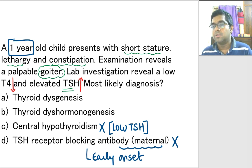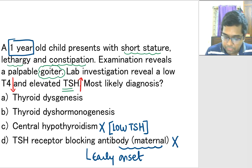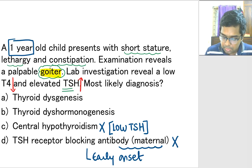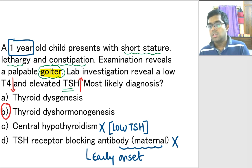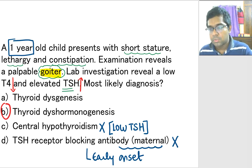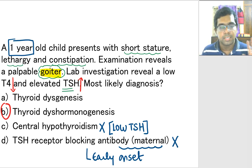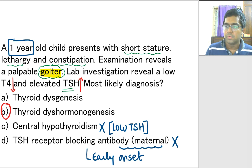We said it is a late onset form of congenital hypothyroidism. Very clearly, the child has a palpable goiter. So you can straight away make your diagnosis — it is going to be thyroid dysharmonogenesis. The only clinical clue in that question is goiter. Presence of goiter: thyroid dysharmonogenesis. Absence of goiter: thyroid dysgenesis.